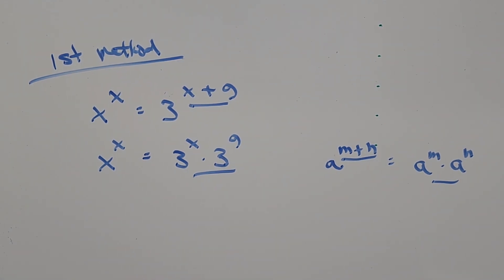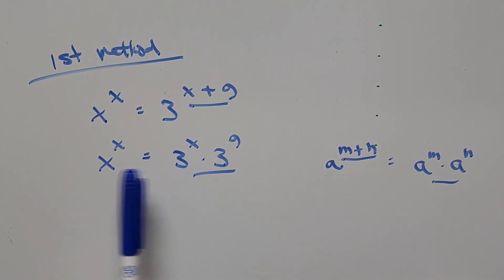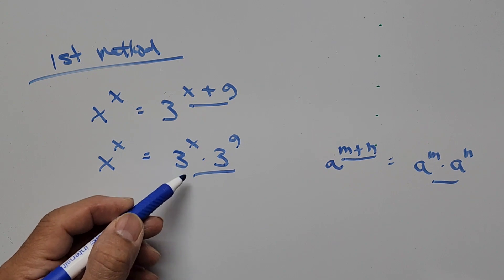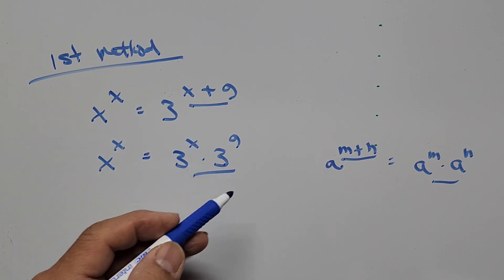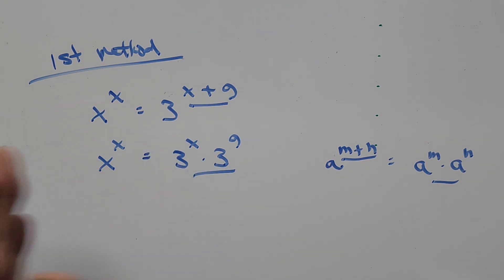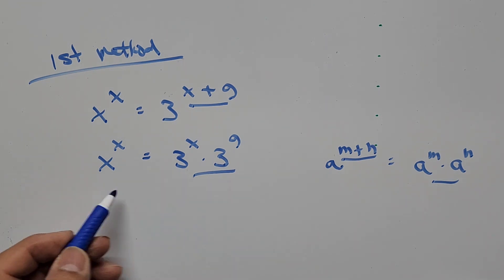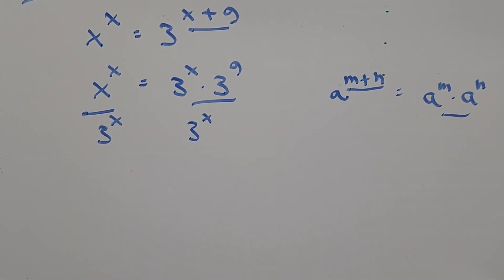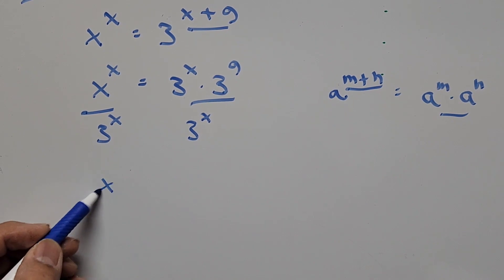From here, to solve for the variable x, we need to combine all terms with the variable x. We have x on both sides, so we need to get rid of the 3 to the power of x on the right-hand side — all variable terms should stay on the left-hand side. The way to do that is to divide the whole equation by 3 to the power of x.